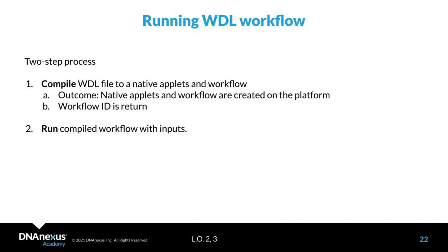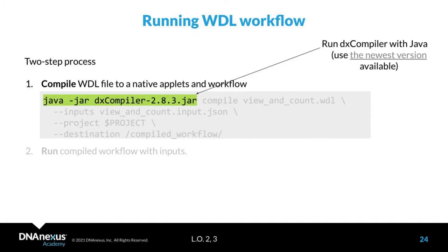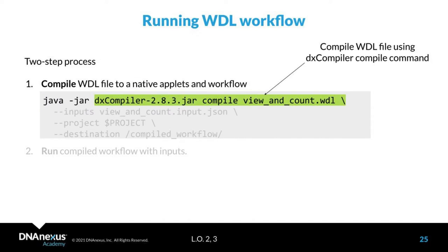Let's dive deeper into each step. The first command you'll use to kick off compilation may seem like a lot, but we'll go through each part individually. You need to initiate DX compiler, which is available as a JAR file — a Java archive. You initialize it using Java with the --jar argument, followed by the compile directive and then the WDL filename. So the command reads: java -jar dxcompiler.jar compile [your_wdl_file]. If you have inputs in a JSON file, you can use the --inputs argument to specify them.